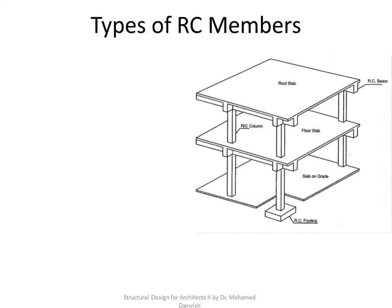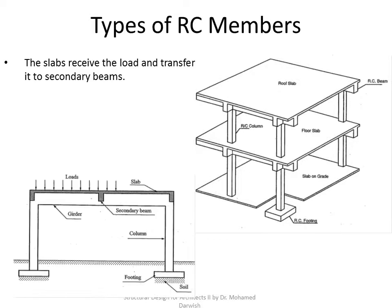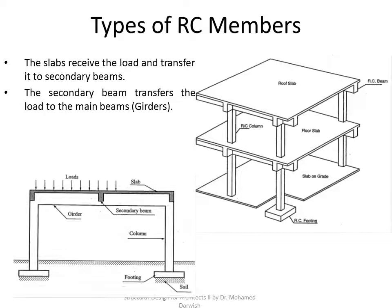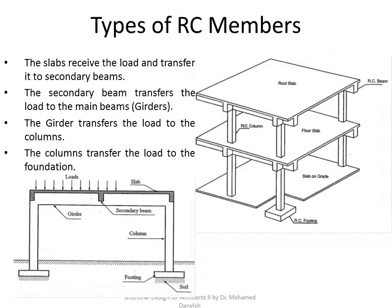Typically, the configuration we are talking about is that you have a slab, and this slab is supported on a system of secondary beams that then support or transfer the load to main girders. The main girders transfer the load into columns, which then transfer the load to the substructure or foundations.